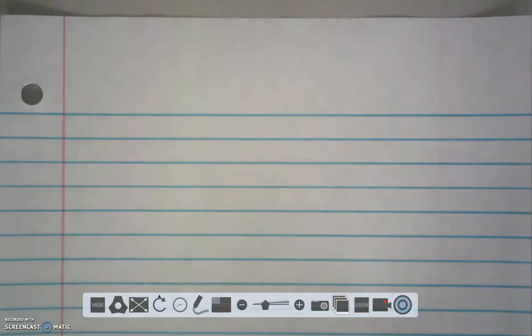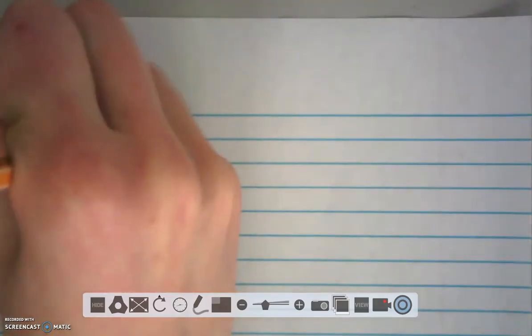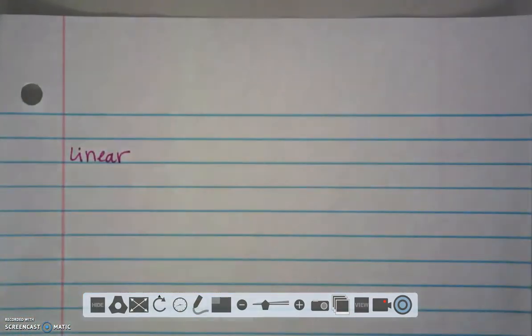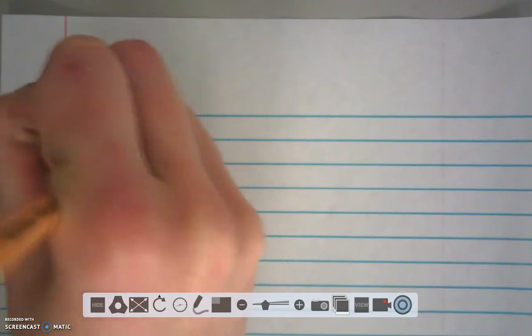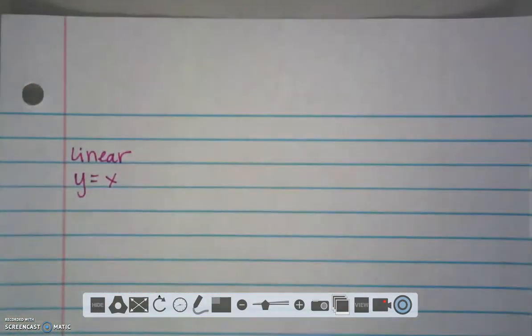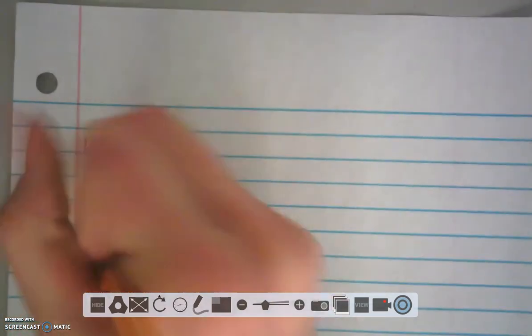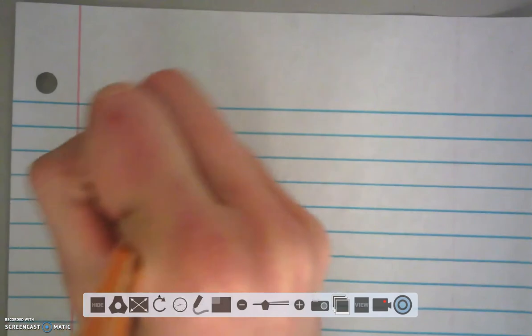So far in class we have talked about linear functions and the parent function for a linear function is y equals x. And we practice graphing this and y equals x is a function that looks just like this and crosses through the origin.